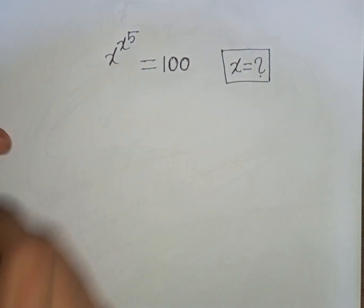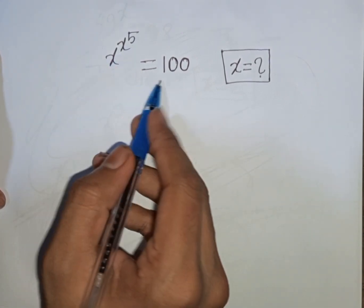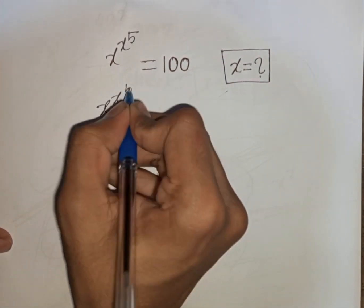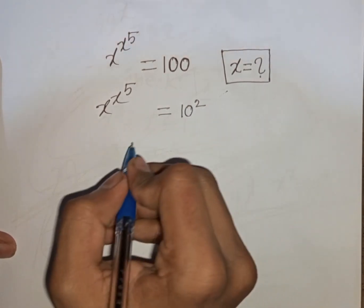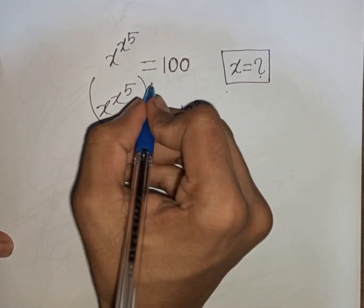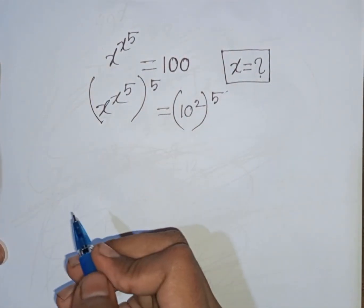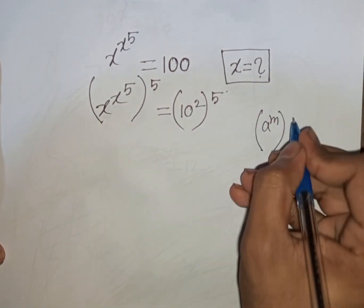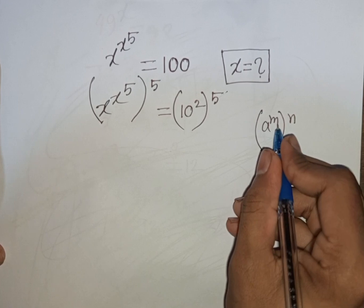Now I will solve this exponential equation: x power x power 5 is equal to 100. Find the value of x. We have x^(x^5) equal to 100, the same as 10 squared. Now we raise both sides to the power of one-fifth. We can apply the exponential rule that a power m, bracket power n, is equal to a power n bracket power m.